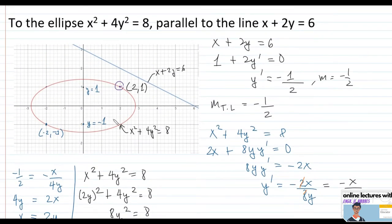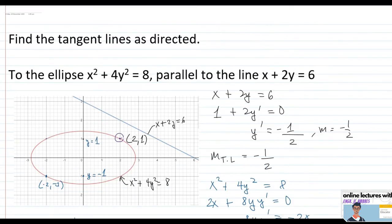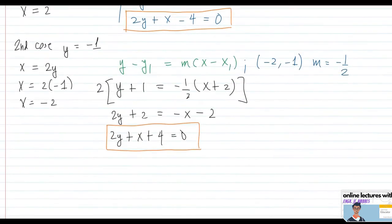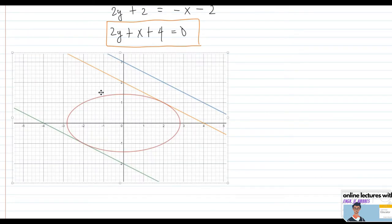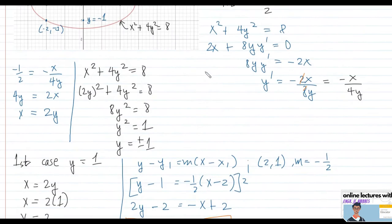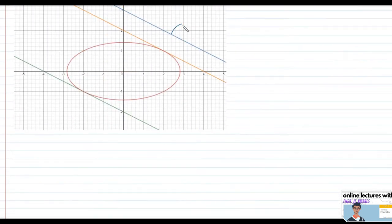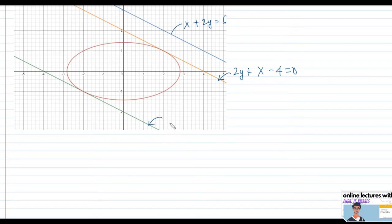Graphing confirms our results — we have produced two lines parallel to x plus 2y equals 6. The yellow line represents 2y plus x minus 4 equals 0, and the green line is 2y plus x plus 4 equals 0. You can use a grapher to verify your answers.